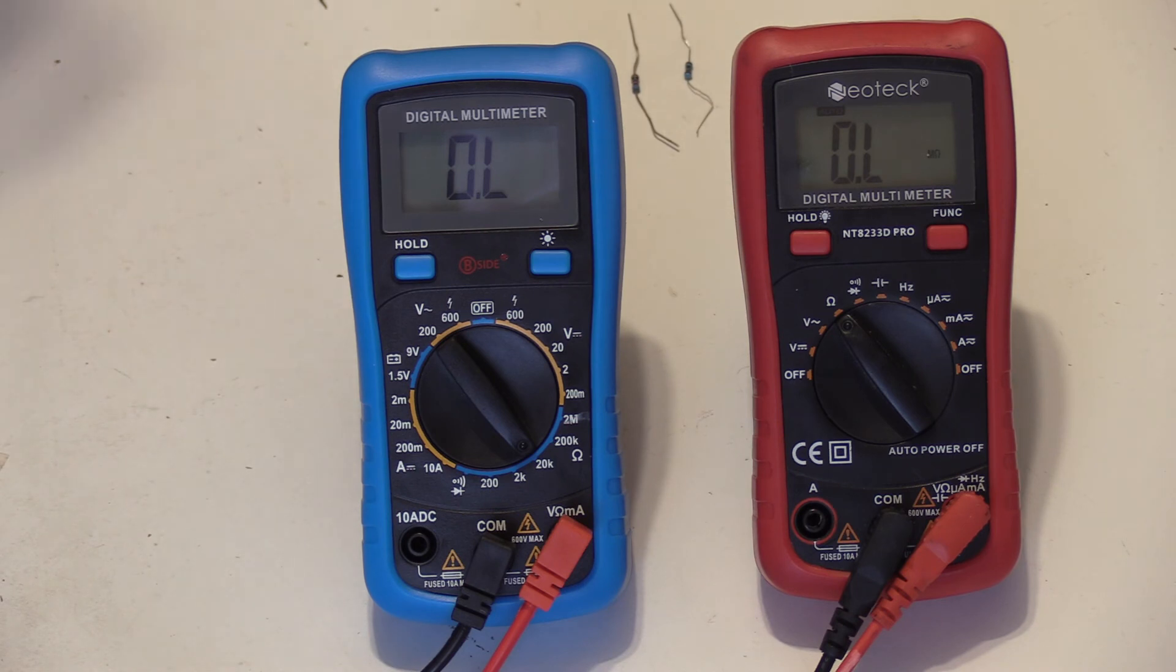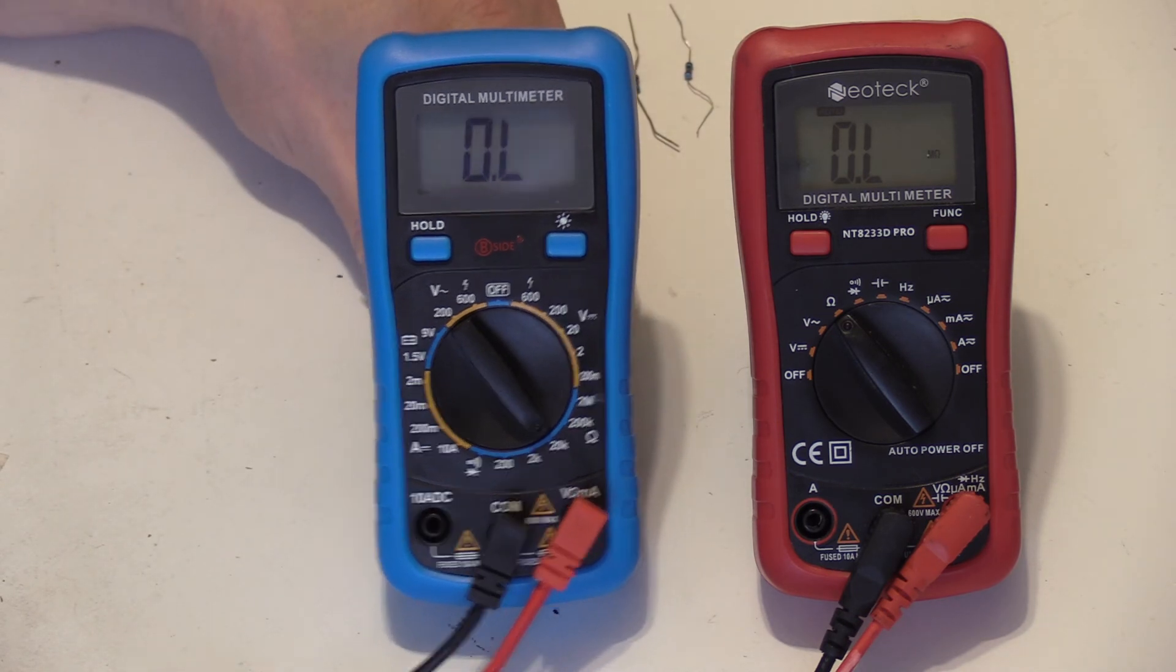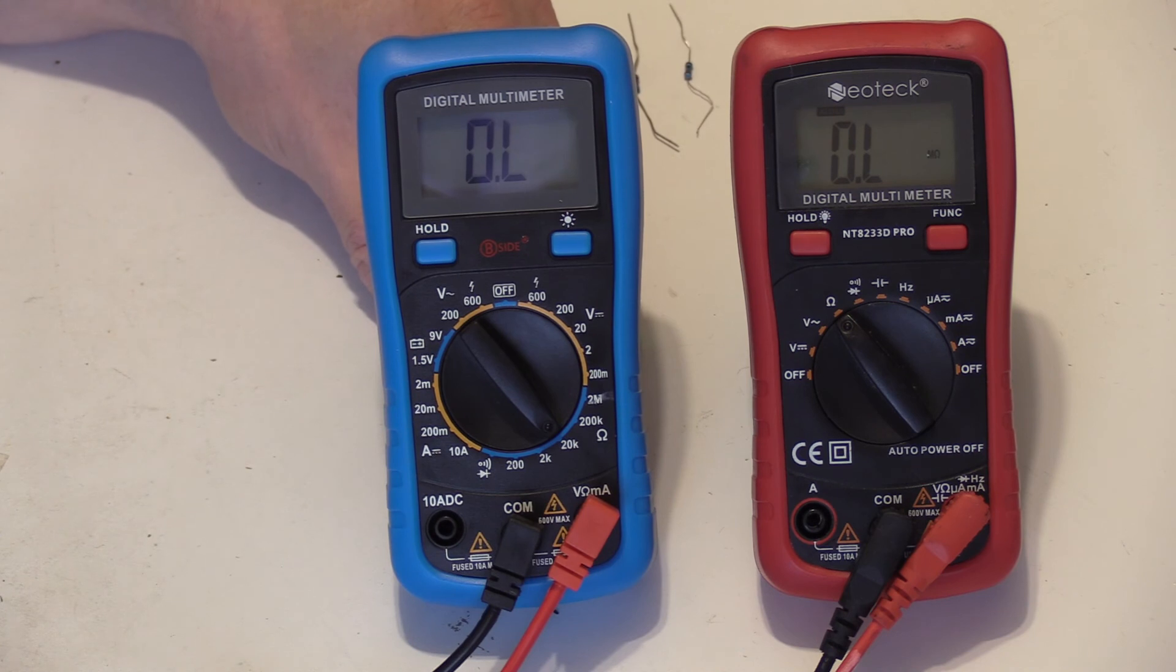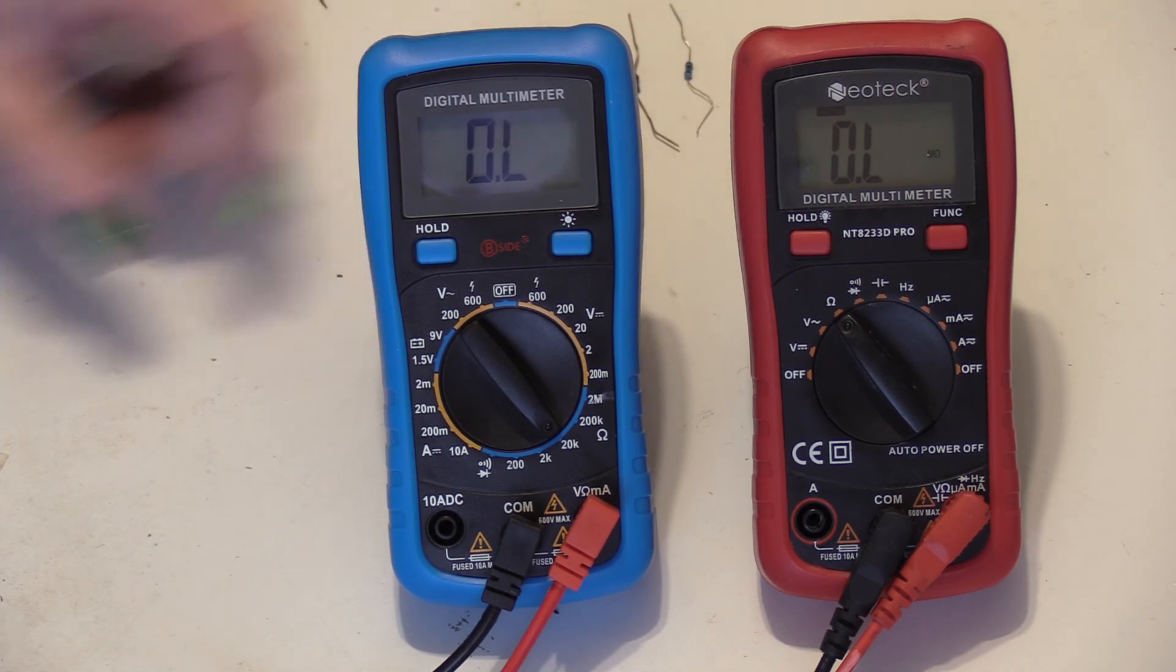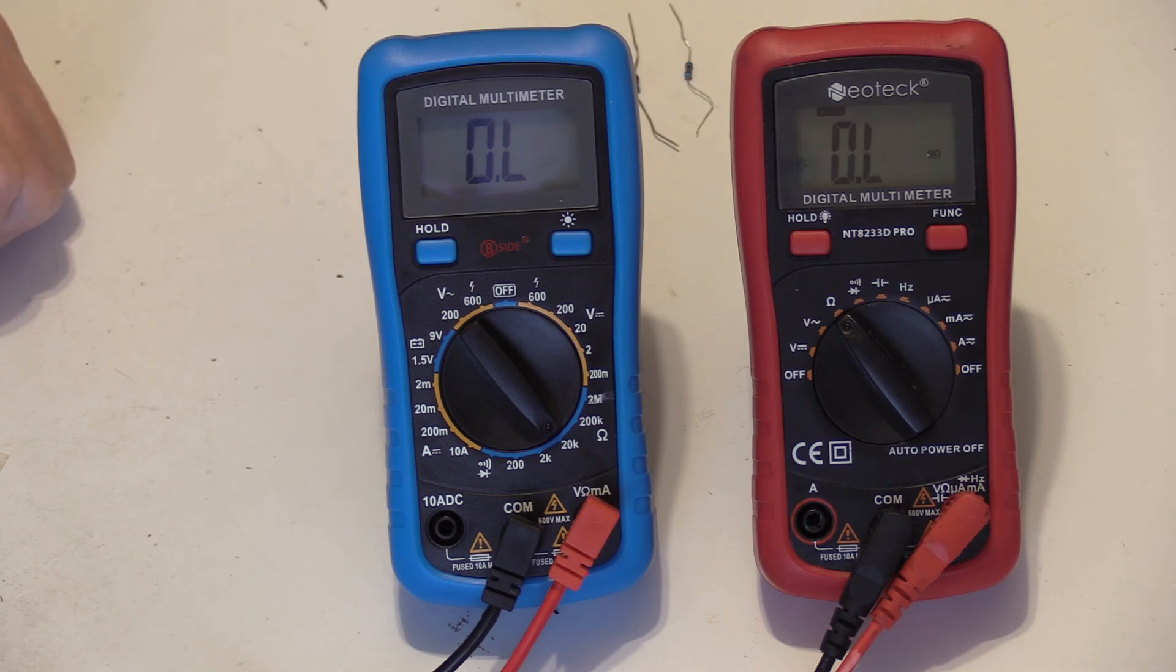But for smaller things, I do prefer the manual ranging one. Again, it's your choice. These both cost under 20 pounds each. And as usual, thank you for watching. Please support the channel. Buy me a coffee.